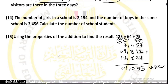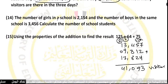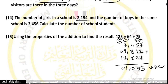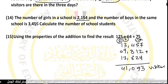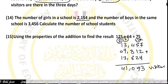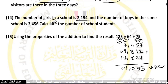Number 14: the number of girls in a school is 2,154, and the number of boys in the same school is 3,456. Calculate the total number of school students. Calculate means sum or addition.